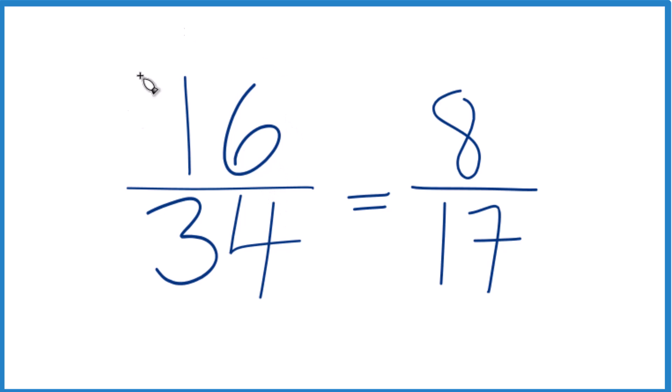And these two fractions, 16/34 and 8/17, they're the same, they have the same value. If you divide 16 by 34, eight by 17, you get the same number, just that we've reduced 16/34 here down to 8/17.